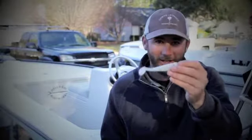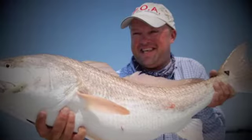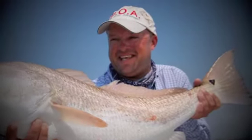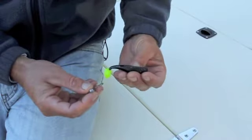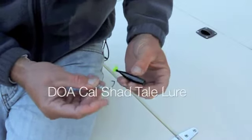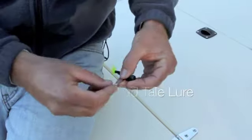This lure is easy to rig and very effective. Another classic popular bait for low tide redfishing is a three and a half inch shad tail rigged on an eighth ounce jig head.